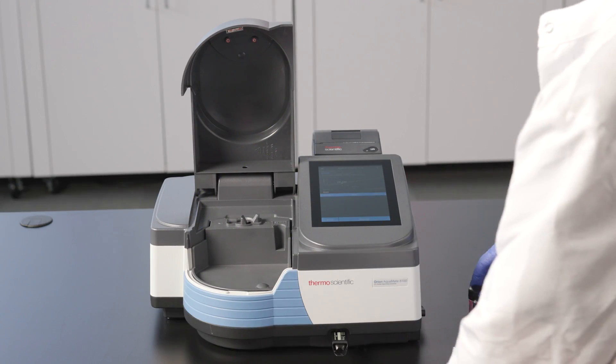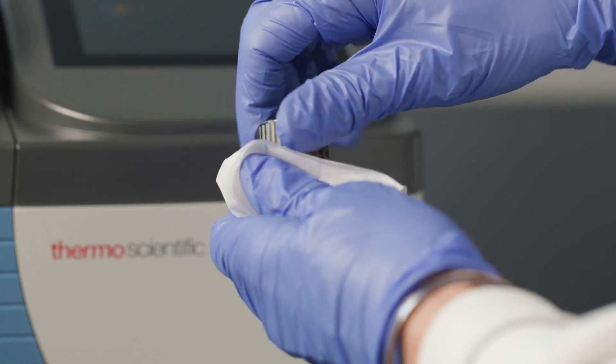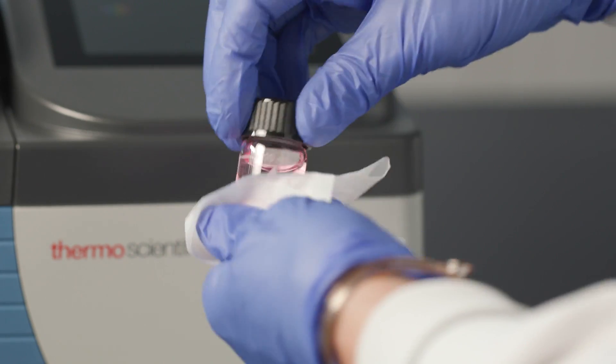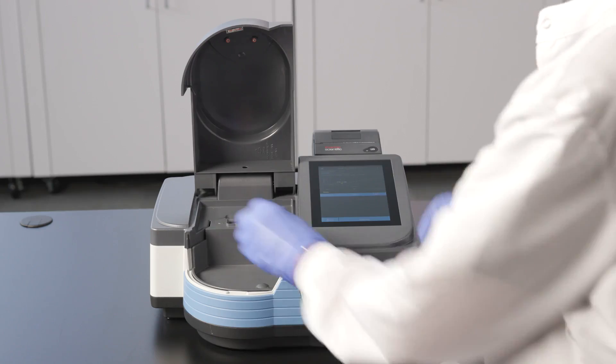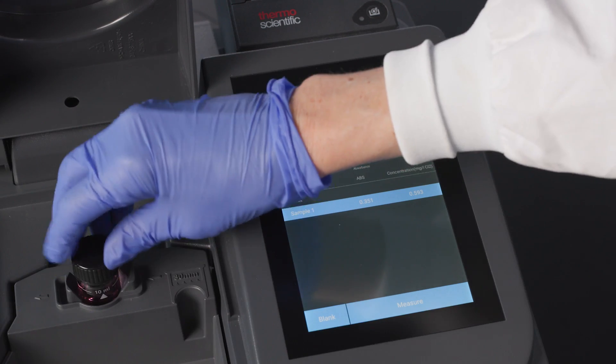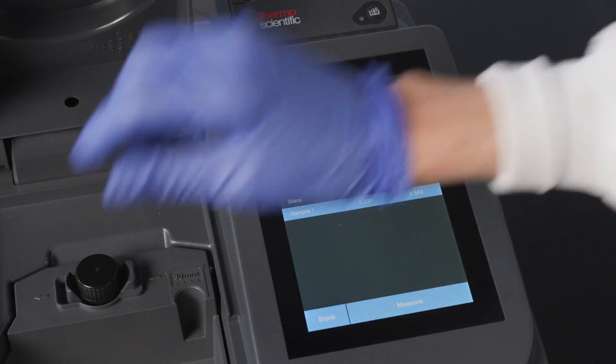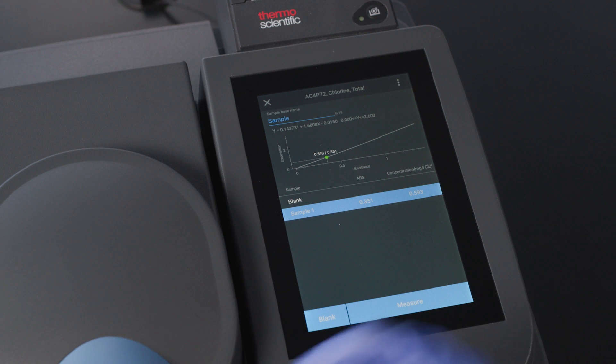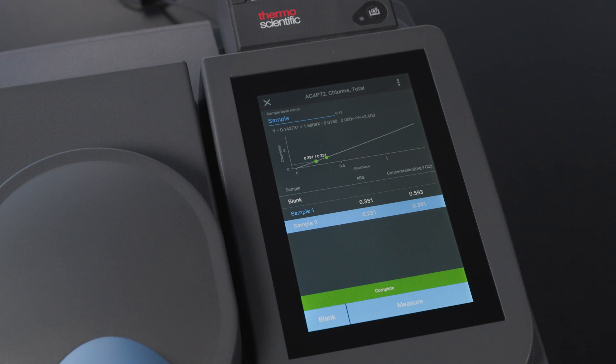Then we can repeat the process for other samples by simply changing the sample in the holder and pressing Measure again. The process is fast and easy.